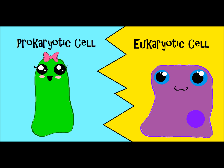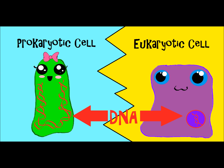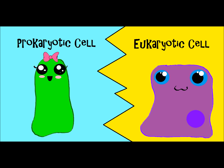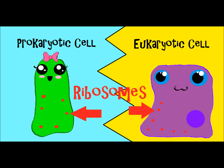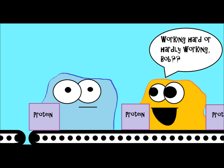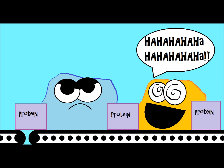Also, both prokaryotes and eukaryotes have genetic material in the form of DNA. They both have this — otherwise, whenever you make more of that type of cell, there would be no way to transmit the genetic information. Prokaryotes and eukaryotes both also have ribosomes, which are tiny little structures that help make protein for the cell. We actually get to this fascinating process a little bit later.